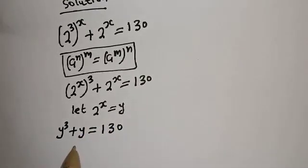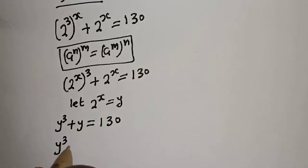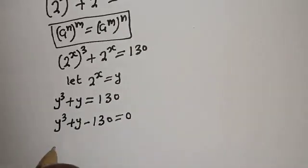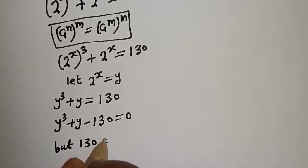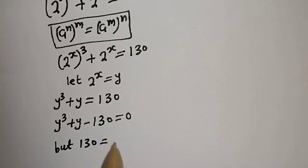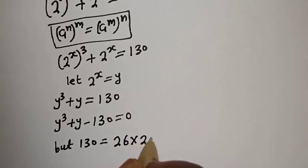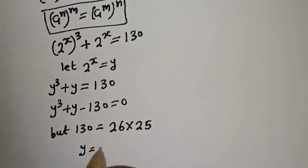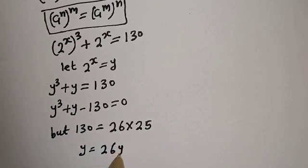Let's bring 130 to this side: y raised to power 3 plus y minus 130 is equal to 0. Now, 130 is equal to 26 multiplied by 25, and this y can be written as 26y minus 25y.